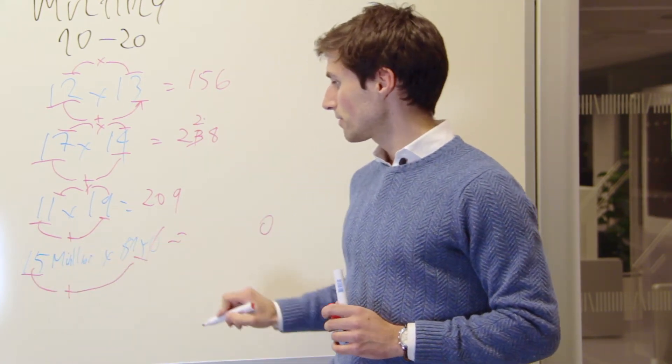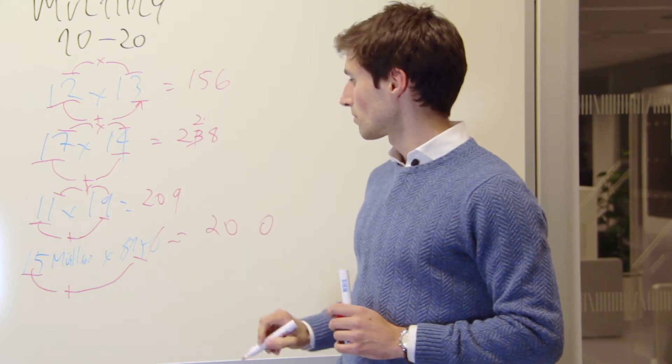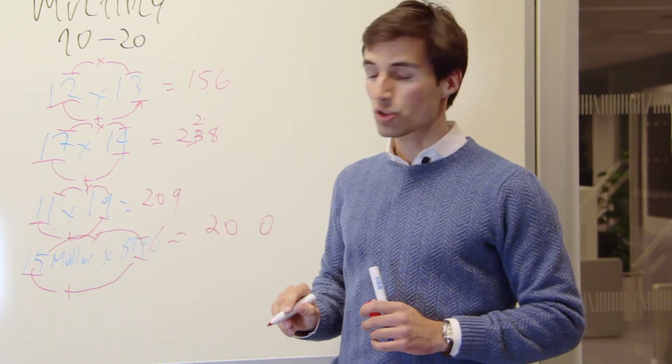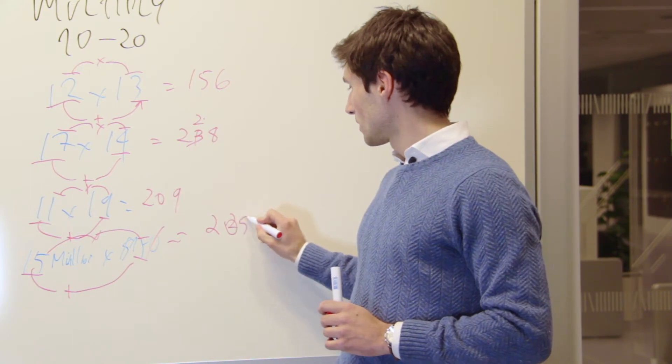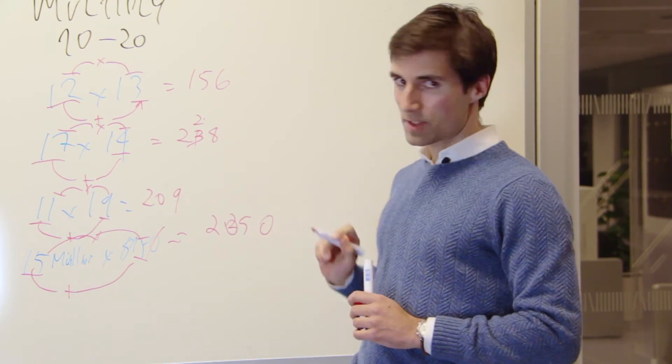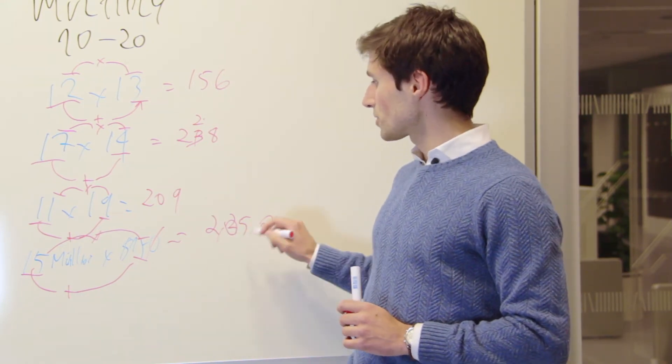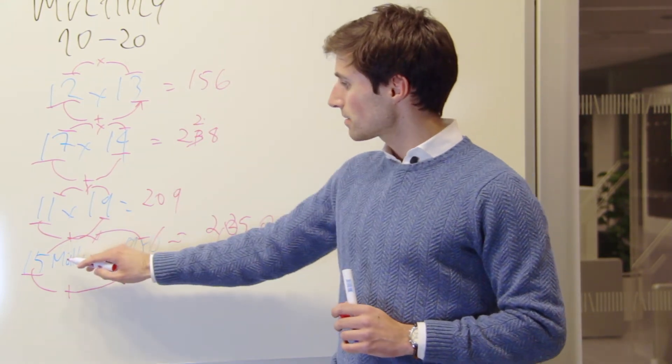15. Now add 5. You get 20. And then 5 multiplied by 5. That's 25. So, 225. With the zero that we took out, we get 2250. And in this case, million.